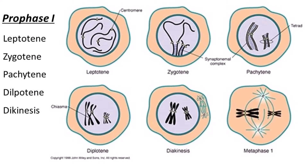Third is pachytene. During pachytene stage, crossing over of non-sister chromatids of homologous chromosomes takes place. Genetic recombination is produced due to such exchange. The homologous chromosomes still remain paired together at the site of crossing over.